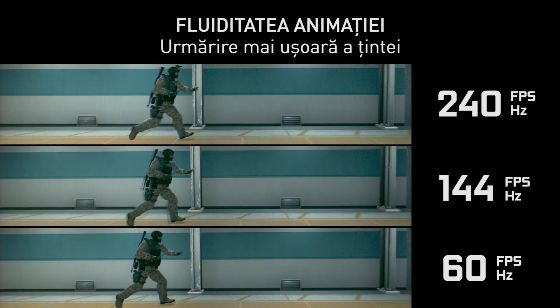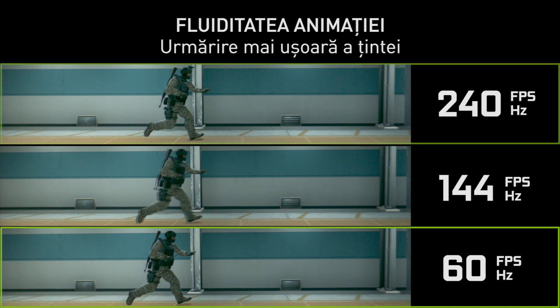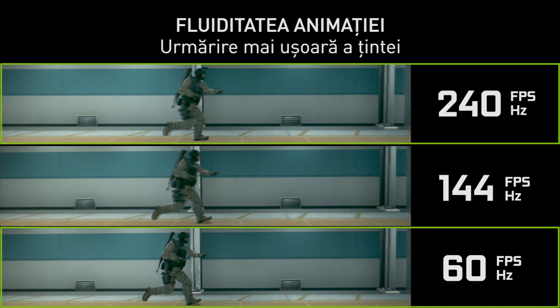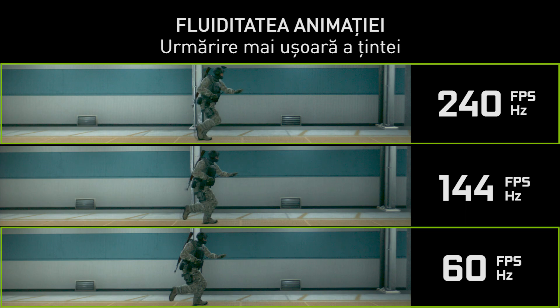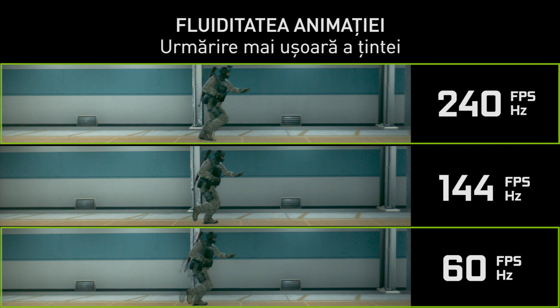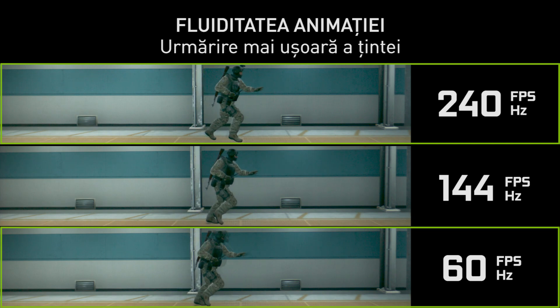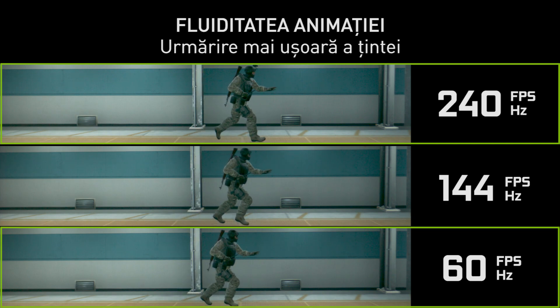Looking at this top and bottom, you can see that 60 frame and 240 frame rate video have a very different feel in terms of smoothness. The 60 frame rate video has much larger animation steps, making it feel much less smooth than the 240 frame per second video.